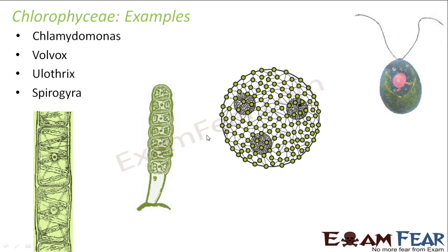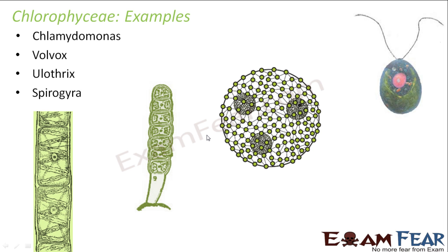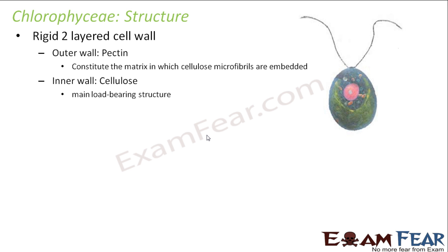Examples of Chlorophyceae include Chlamydomonas, Volvox, Ulothrix, and Spirogyra. All these are examples of Chlorophyceae because they have the pigment chlorophyll and are all green in color. Basically, the presence of photosynthetic pigments is the basis of classification of algae.